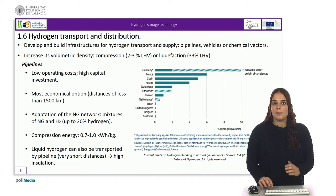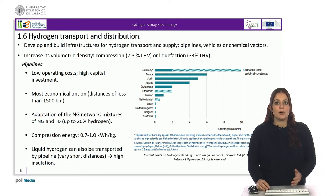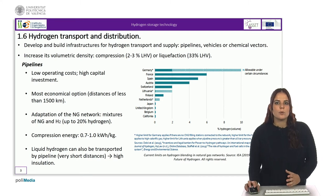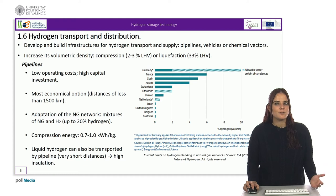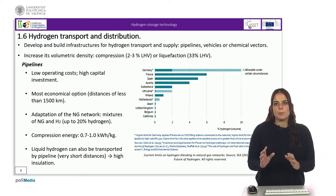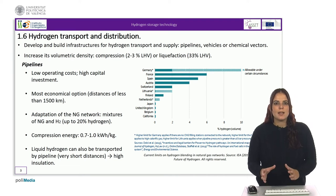Transport can be done by pipelines or by vehicles such as road vehicles, ships, trains, or airplanes. Consideration can also be given to transport of chemical vectors — in other words, the substances in whose composition substantial quantities of hydrogen exist, such as ethanol or ammonia. The transport of these chemical vectors is easier; however, they require appropriate conversion systems to be placed at the point of arrival for the production of hydrogen.